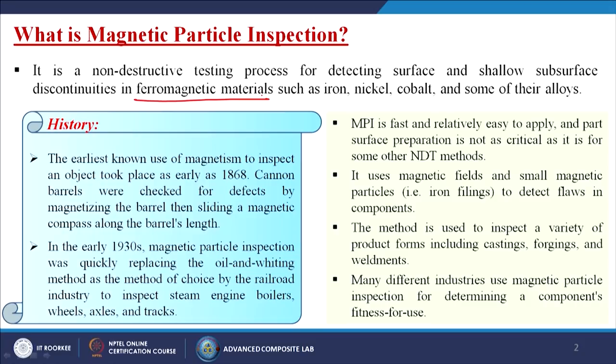Now let us know about the history. The earliest known use of magnetism to inspect an object took place as early as 1868, when cannon barrels were checked for defects by magnetizing the barrels and then sliding a magnetic compass along the barrel's length. When there was any crack, it would generate certain signals, and from those signals the location of the crack could be determined.